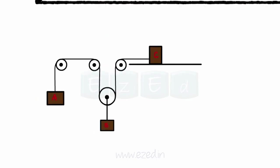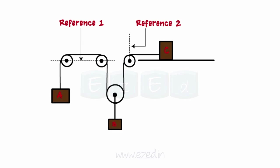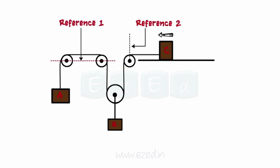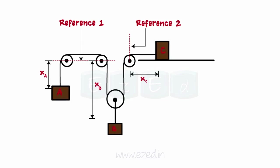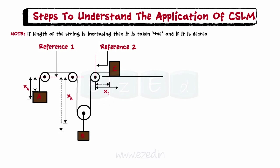Consider the example of three blocks. Step 1: always take the reference axis perpendicular to the direction of motion of the particles. Here, block A and B are moving in a vertical direction, so we take a horizontal fixed reference axis 1. Block C moves in a horizontal direction, so we take a vertical fixed reference axis 2. Mark their positions with respect to the reference axis. Step 2: suppose block B is moving down — block A would travel up and block C to the left. Therefore, the length of the string is as shown.